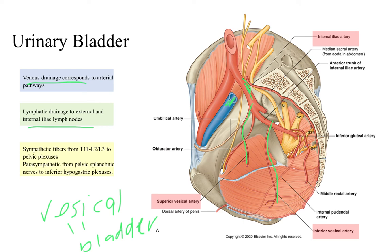The innervation to the urinary bladder comes from sympathetic fibers T11 to L2 or L3, with some variation between people, going to the pelvic plexuses. Parasympathetic innervation comes from the pelvic splanchnic nerves to the inferior hypogastric plexuses, which we've seen in previous lectures. If you want to remind yourself of where those are, go back to the lectures on the organs of the abdominal cavity.